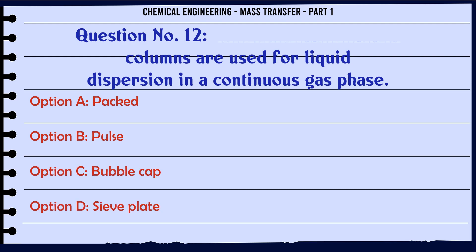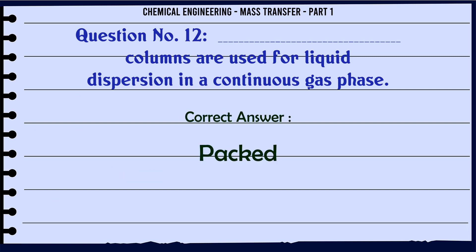[Packed] columns are used for liquid dispersion in a continuous gas phase. A. Packed. B. Pulse. C. Bubble cap. D. Sieve plate. The correct answer is Packed.